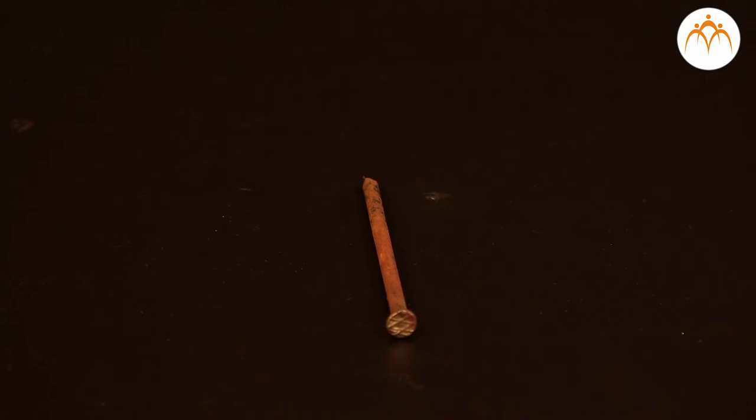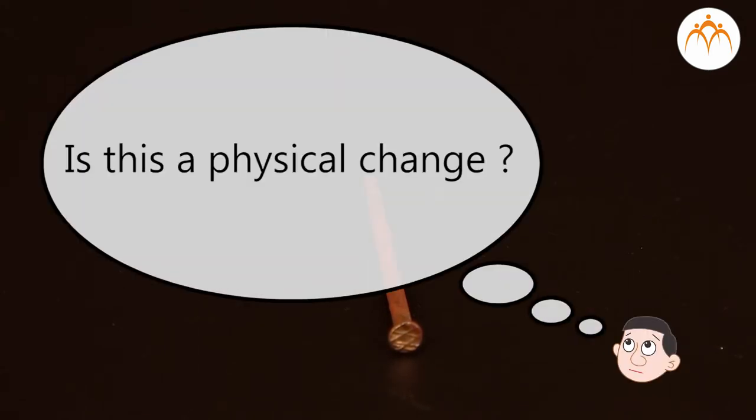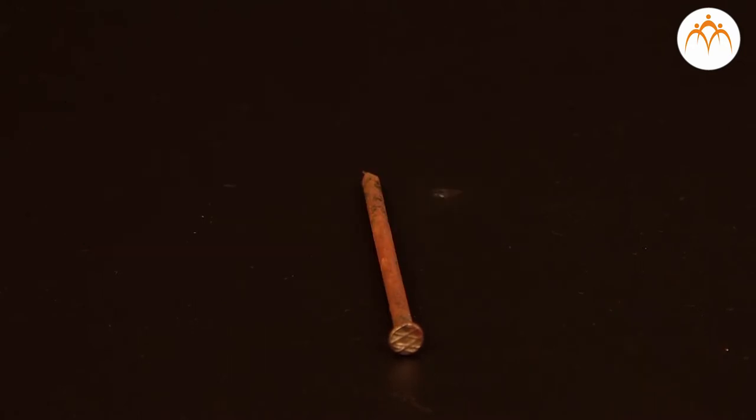The second experiment setup consists of an iron nail kept outside for some time. As you can see, a small amount of rust has started forming on the surface of this nail. Is this a physical change? As we can think, the appearance of the iron nail has changed.